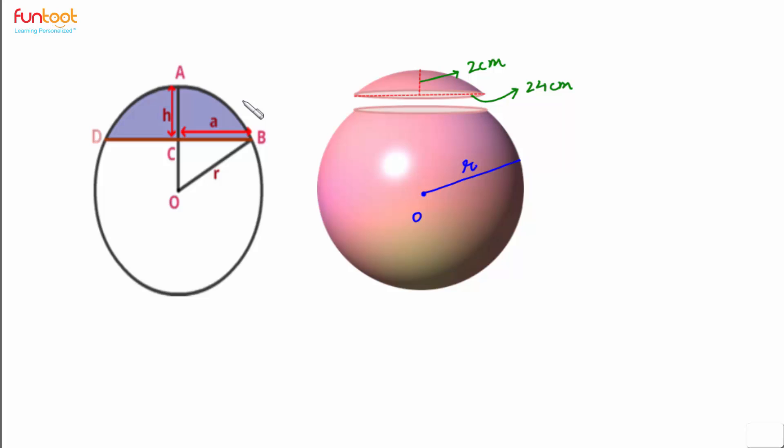Here AC is the maximum depth of the lid and as discussed, AC will be 2 centimeters. So AC is 2 centimeters. The diameter of the base of the lid is given as 24 centimeters, so DB here is 24 centimeters.